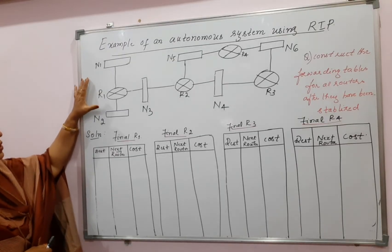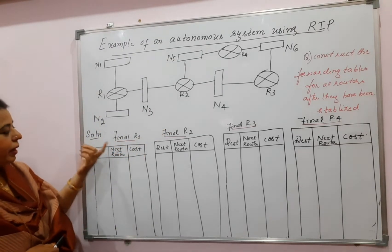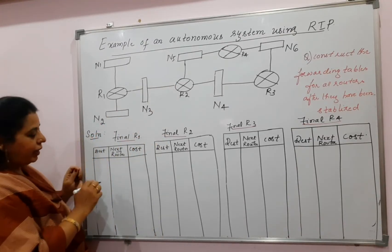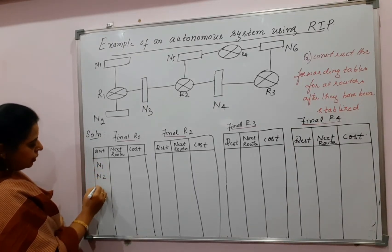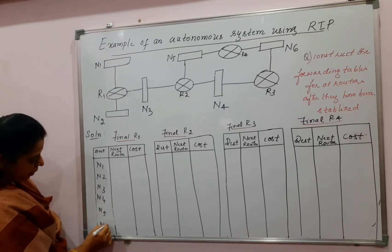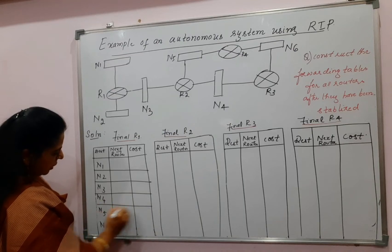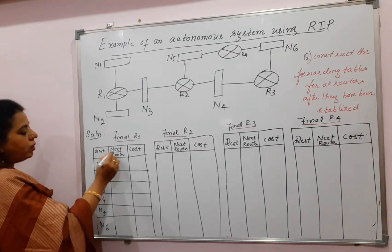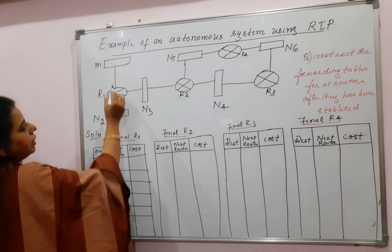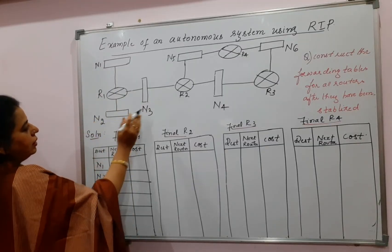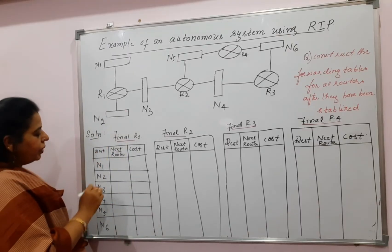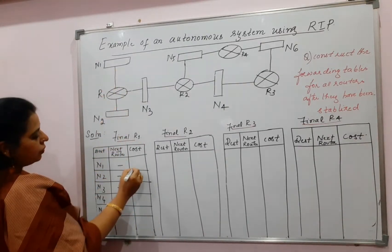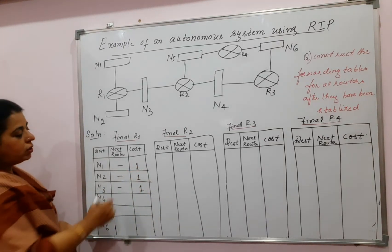Now let us construct the tables. In the question, the autonomous system is given. Write the heading 'Final Routing Table for R1.' Since there are six networks in the diagram — N1, N2, N3, N4, N5, N6 — first write all the network numbers. For a question worth three to four marks, only the stabilized table is needed; for six to seven marks, both initial and final. For R1, first check which networks are directly connected: N1, N2, and N3. The next router is dash (directly connected) and the cost is one hop each.